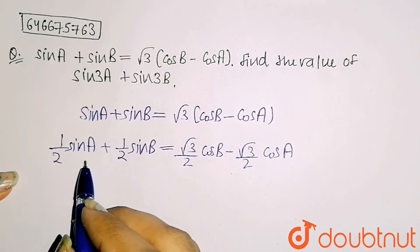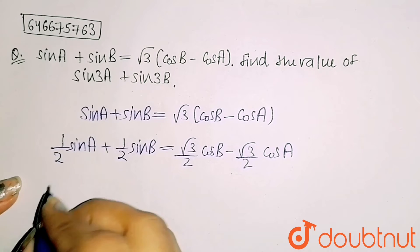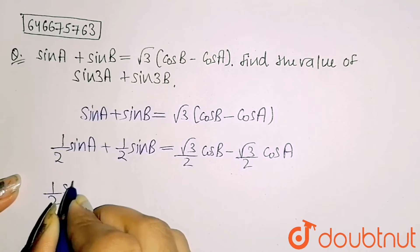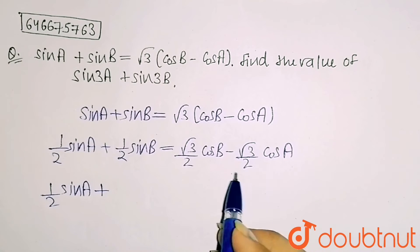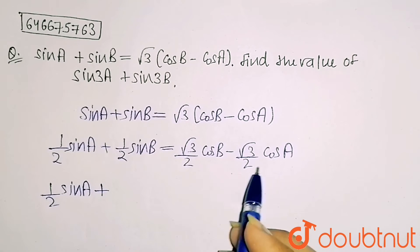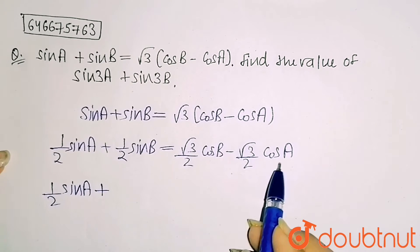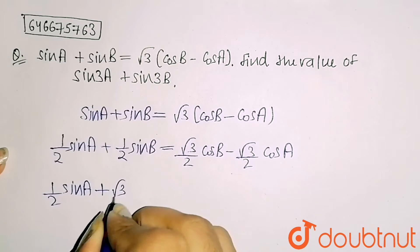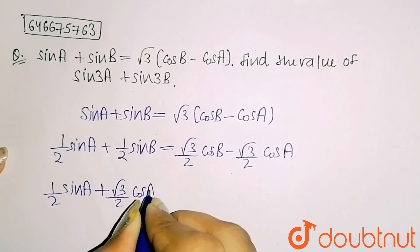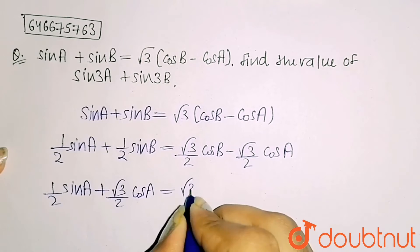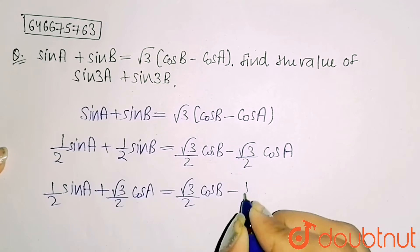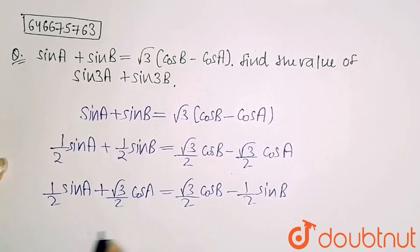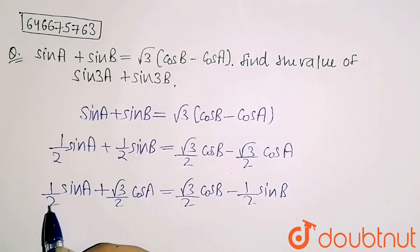Now I take the minus root 3 by 2 cos A term to the left side, giving plus root 3 by 2 cos A. And I take the root 3 by 2 cos B term to the right side, giving minus 1/2 sin B on the right side.